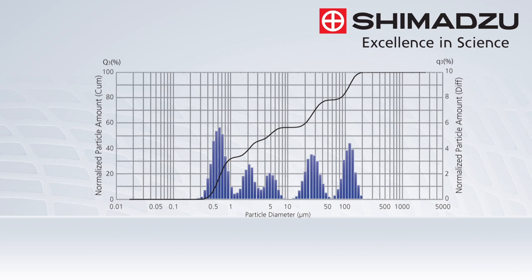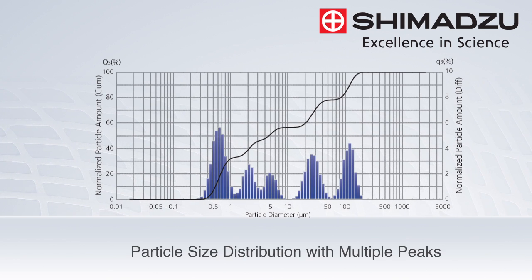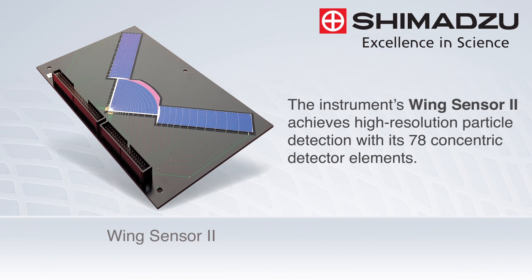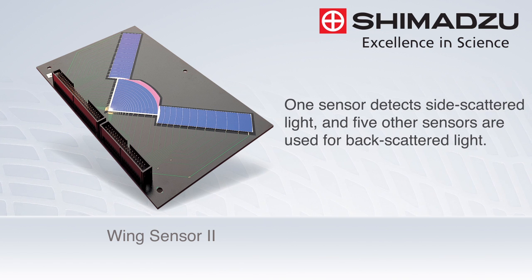Some complex samples may contain several particle size distributions. With its high resolution capabilities, the SALD2300 enables the acquisition of data with multiple peaks. The instrument's Wing 2 sensor achieves this with its 78 concentric detector elements — one sensor detects side-scattered light, and five other sensors are used for back-scattered light.